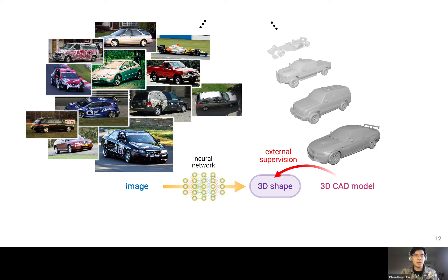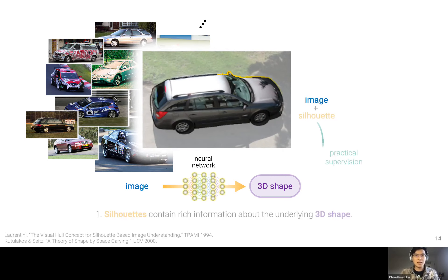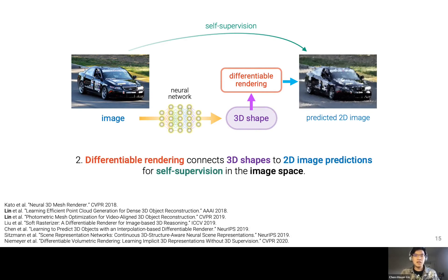The most straightforward training approach is to directly supervise with corresponding 3D CAD models, requiring a large dataset of image-shape pairs. But available image data far exceeds annotated CAD models, and for many training images we don't even know the ground truth CAD models. Instead, we can assume annotated object silhouettes are available — silhouettes contain rich information about possible 3D shapes, dating back to works on visual hull and space carving. Silhouettes are cheap to annotate in seconds, and efficient semi-automatic labeling tools also exist.